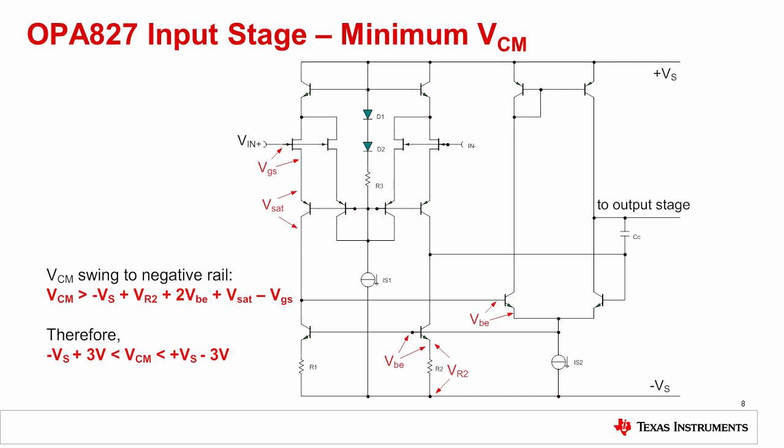For this topology, we will only analyze the common mode swing to the negative rail using the same method as before. We will omit the details for brevity, but the common mode limit is 3 volts from either rail. The important point here is that the bipolar input topologies will generally have common mode limitations to both power supply rails, while CMOS topologies can achieve common mode voltage range to either or both rails. This is because in CMOS devices, the VDS saturation voltage can be adjusted through transistor sizing, while in bipolar devices, the saturation voltage is fixed.